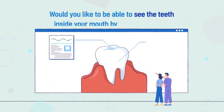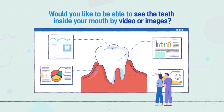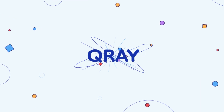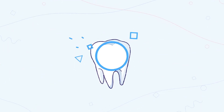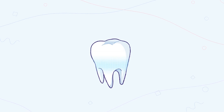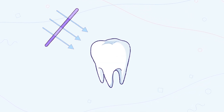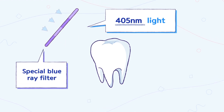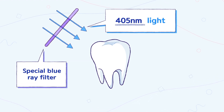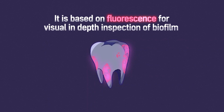Would you like to be able to clearly see the inside of your mouth by yourself? With Q-Ray, this is all possible. Q-Ray uses fluorescence for visual in-depth inspection by using a 405 nanometer light and a special blue ray filter in front of your eyes for biofilm visualization on your teeth.